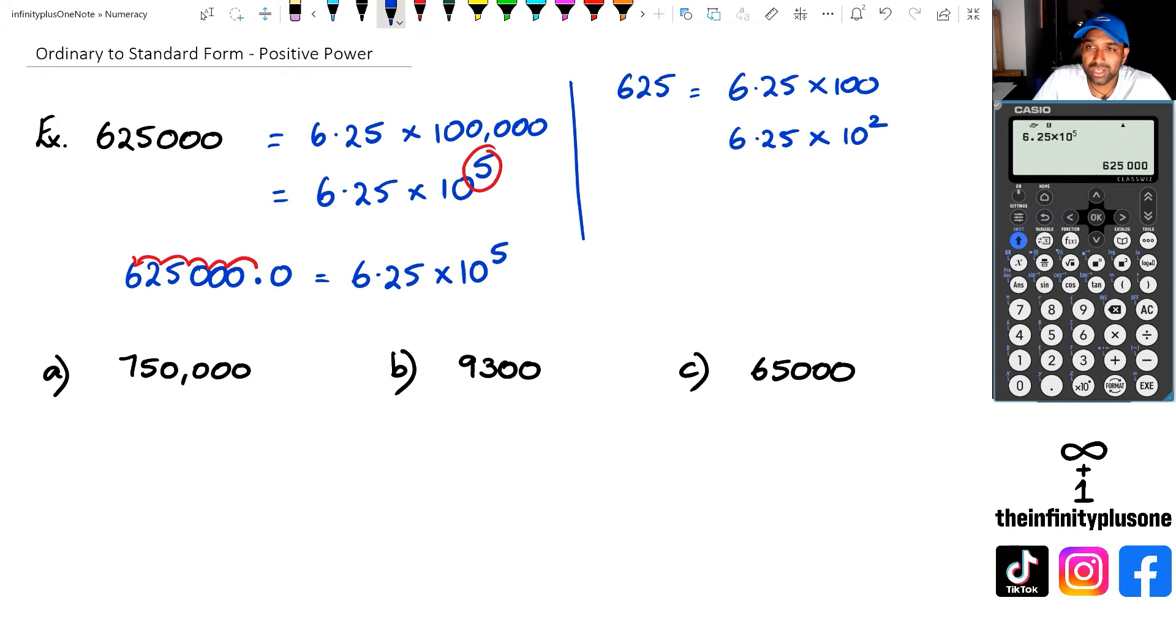You're allowed to use this method - there's nothing wrong with it. But sometimes you forget, am I going right or left? Especially when it comes to negatives. You've got to do a lot of them so that you're confident. Otherwise, you could always do the old method, which is multiply by 100,000 or 100, whatever, and then rewrite that as 10 to the power of something.